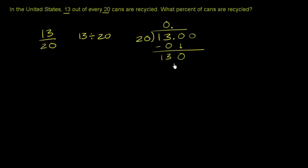Let's see. It goes in 5 times 20 is 100. So 6 times 20 is 120. So it's going to go 6 times. 6 times 20 is 120. You subtract. You get a 10.